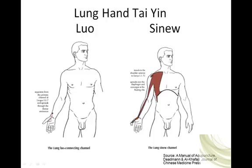All of the sinew channels begin on the extremity. This one begins on the radial side of the thumb, moves across the palmar aspect of the thumb, across the transverse wrist crease, and follows the distribution of the channel itself, but sinew channels are broader distributions.